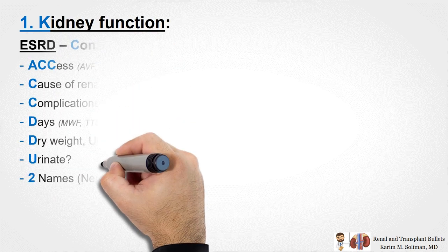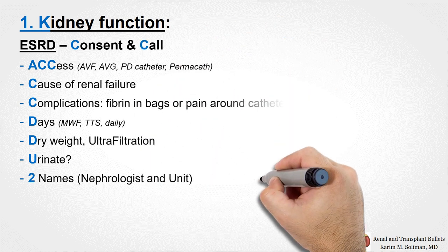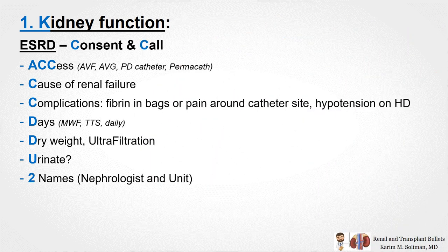If it's an ESRD case, don't forget the CC. Obtain consent for dialysis and call the dialysis unit to get the dialysis run sheet. Then add the following eight items to your note: axis, cause, complications, days, dry weight, urinate, and two names — nephrologist and unit.